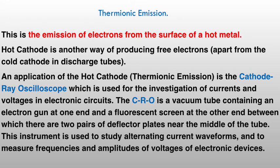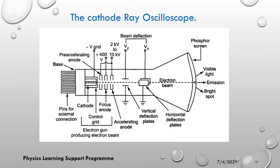Here is a diagram of the cathode ray oscilloscope. The electron gun is visible right there, and we also have the fluorescent screen. We have the accelerating anode and the cathode. This is a simple diagram of the cathode ray oscilloscope.